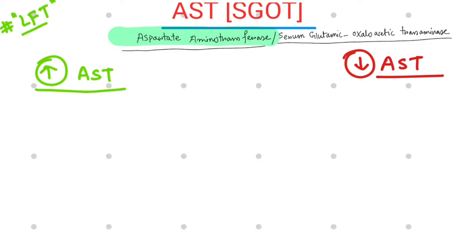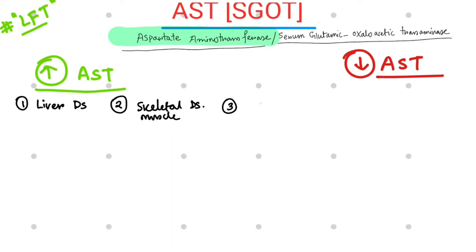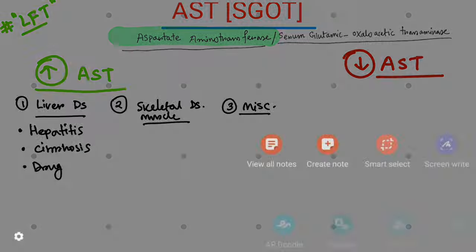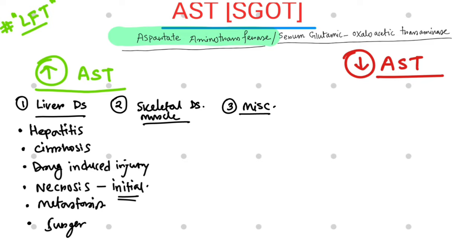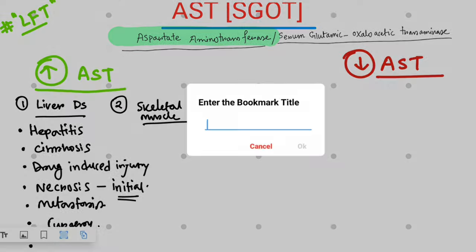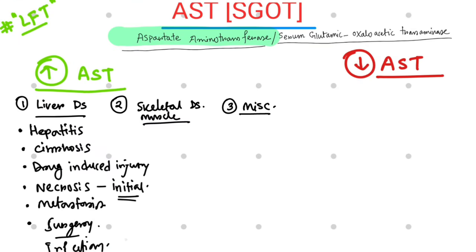Conditions where AST levels will rise can be classified under liver diseases, skeletal muscle diseases, and miscellaneous diseases. Liver diseases include: hepatitis, cirrhosis, drug-induced liver injury, hepatic necrosis (in initial stages only), hepatic metastasis, hepatic surgery, infectious mononucleosis with hepatitis, and hepatic tumour.